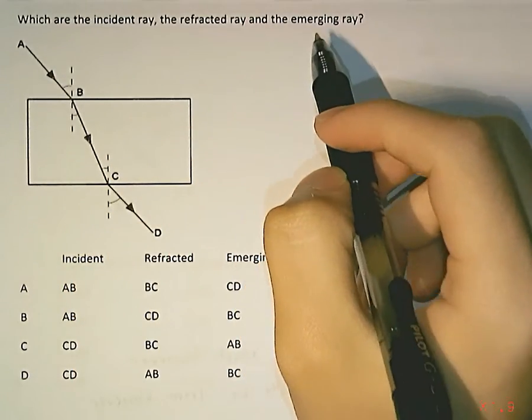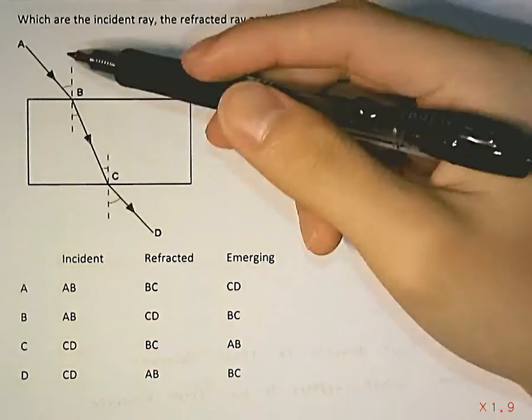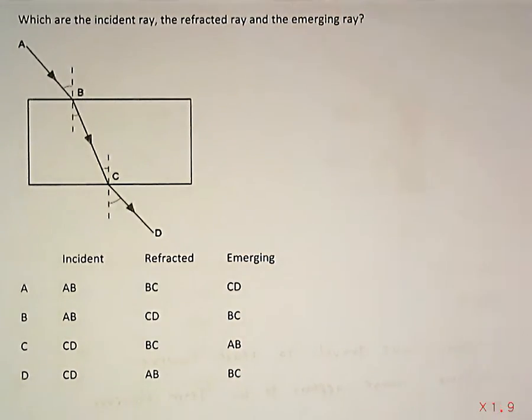So which are the incident ray, the refracted ray, and the emerging ray? This is basically testing you if you know your names of your different rays. The reason why this is important is just so that people can say incident ray and you will know what they're talking about.